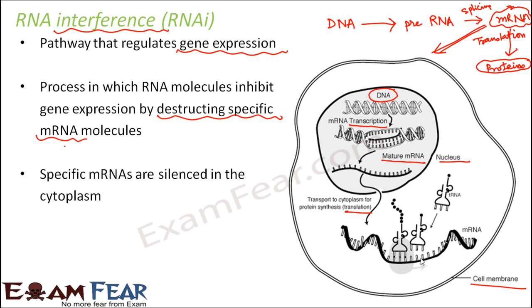Specific mRNAs are silenced in the cytoplasm. If these mRNAs are silenced, translation cannot take place and proteins corresponding to those mRNAs will not be synthesized. The next slide will cover exactly how the mRNAs are silenced, under the RNA interference pathway.